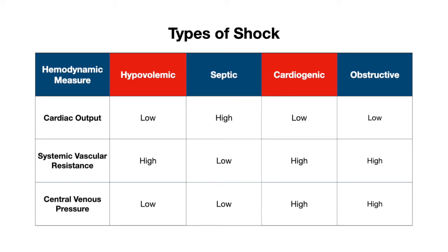Now that we've discussed the three hemodynamic measures across each type of shock, a few key things to keep in mind as you review the comparison table: cardiac output and systemic vascular resistance will often have a reciprocal relationship. Unlike the other three types of shock, septic shock will have low systemic vascular resistance and high cardiac output due to that hyperdynamic state. If you truly understand the underlying pathology of each shock type, it's easy to recall what happens to each hemodynamic measure.